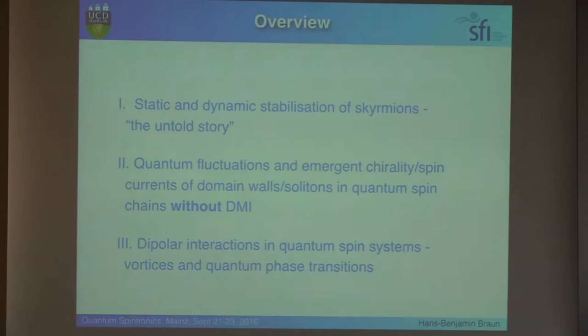So then the second part goes then to this emergence of chirality or spin currents, which I just mentioned before, and I emphasize there is no DMI there. So there is nothing, nor is there asymmetry in the boundary conditions. This is just spontaneous emergence of chirality. And finally, dipolar interaction in quantum spin systems. So dipolar interactions are not the bad and the ugly, as has been mentioned on Monday. Actually, they can be really helpful, and I think this is an absolutely fantastic system to see many of these phenomena.